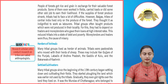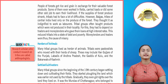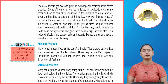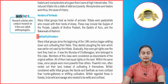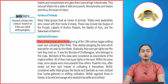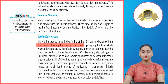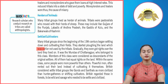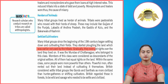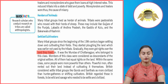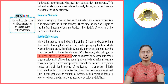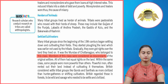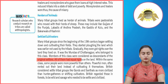Quick facts: research scholars who conduct research on tribes are called anthropologists. Settled cultivators: many tribal groups, since the beginning of the 19th century, began settling down and cultivating their fields, plowing land that was earlier unused by tribals. Gradually they even got rights over the land they lived on. It was the Mundas of Chota Nagpur who belonged to this class — considered descendants of the original settlers with equal rights over land.